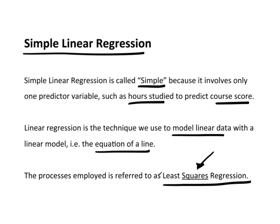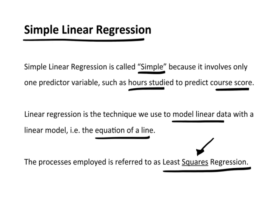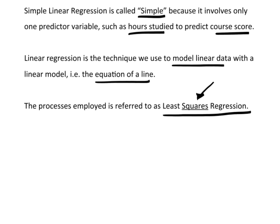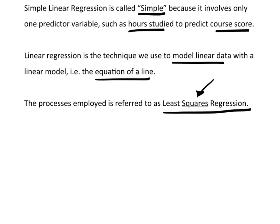The least squares is actually a mathematical process that comes up with the equation of the line. Now, we're going to rely on technology to actually figure out what the equation of the line is, but I do want you to understand a little bit what's going on here. So let's just suppose that we have data. I'm just going to pick like three data points.